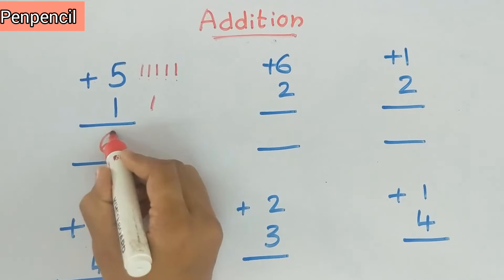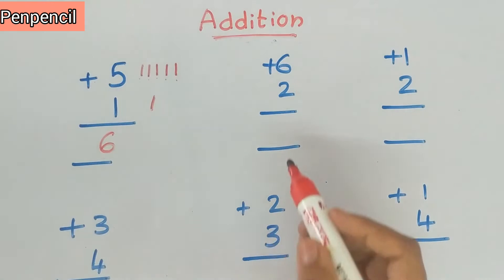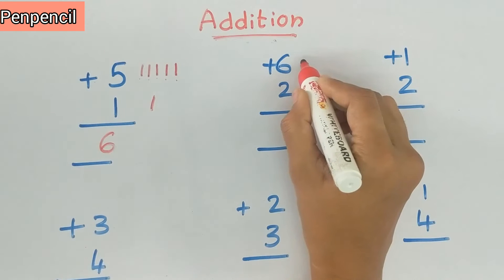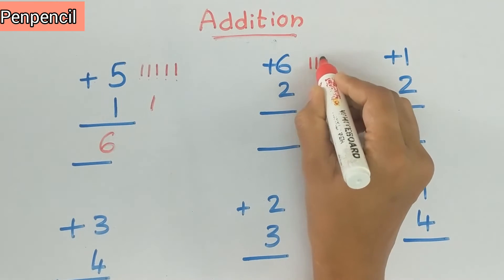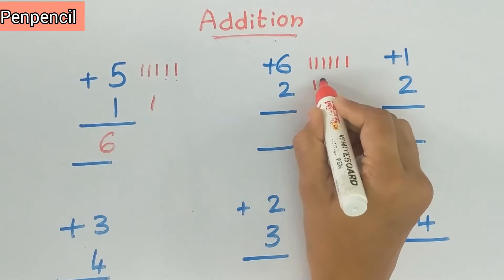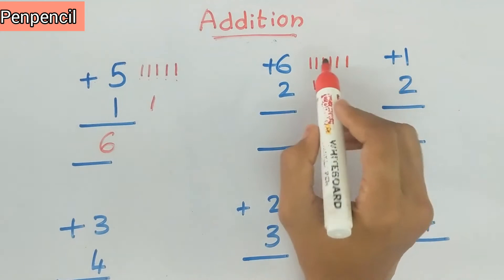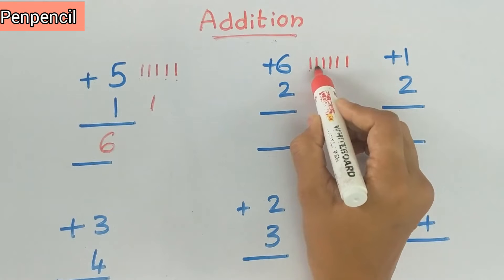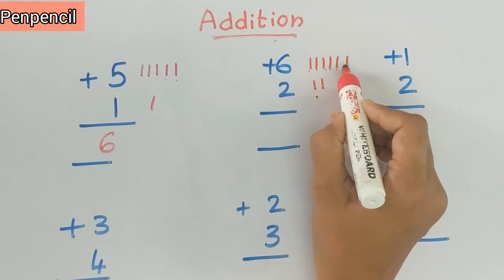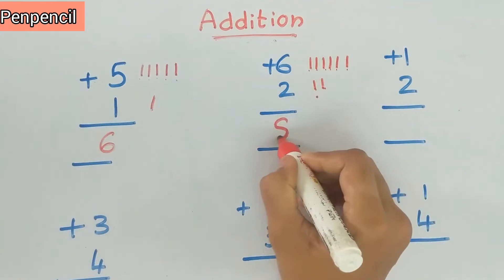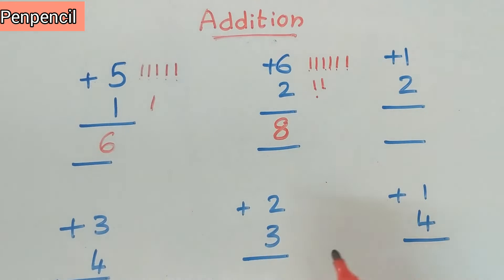Now the next one, 6 plus 2. So we have to draw 6 lines: 1, 2, 3, 4, 5, 6. Here 2 lines we have to draw: 1, 2. Now we have to add all these once again: 1, 2, 3, 4, 5, 6, 7, 8. So the sum means 8.